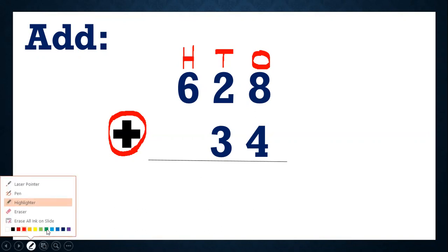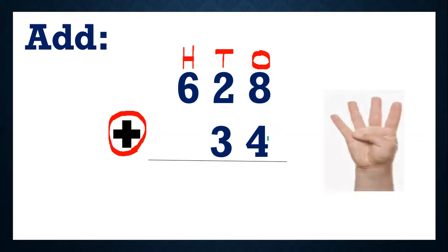So first we will add ones. Okay, now in ones place I have 8 here and 4. So I need to add 8 plus 4. So 8 is a big number. So 8 I will keep in the mind and 4 I will take on my fingers. So from 8, I will count forward.